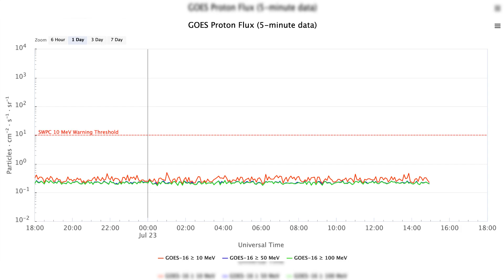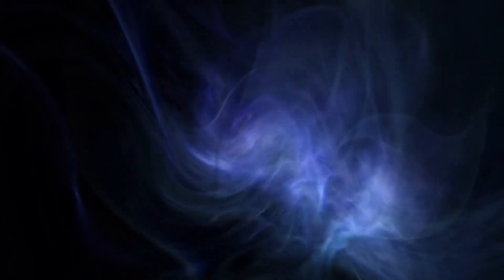Regarding energetic particles, the 2 MeV electron flux was at normal to moderate levels, and the 10 MeV proton flux remained at background levels over the past 24 hours. The forecast indicates that the greater than 2 MeV electron flux is expected to be at normal to moderate levels on the 23rd through 25th of July, while the greater than 10 MeV proton flux will continue at background levels.